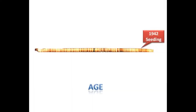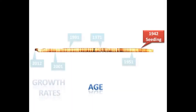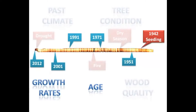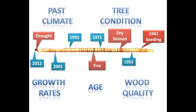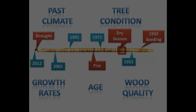Analyzing tree cores allows us to date how old the tree is. The growth rings enable us to reconstruct past climates and events. This particular tree ring illustrates that there was a fire in 1978 and that a dry season was experienced in 1959.